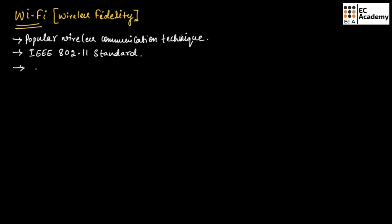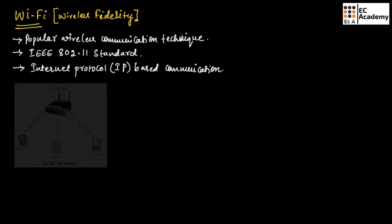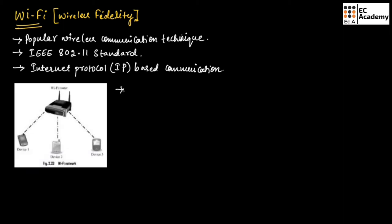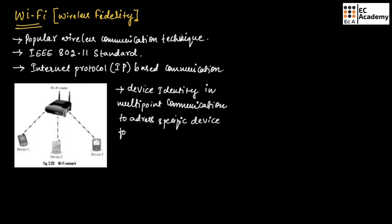Wi-Fi supports internet protocol (IP) based communication. It is essential to have device identity in multi-point communication to address a specific device. This figure shows a Wi-Fi network where a single Wi-Fi router communicates with multiple devices, making device identity very important for data communication with a particular device.